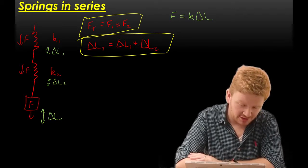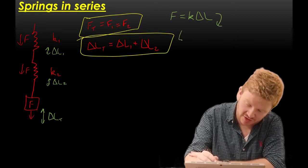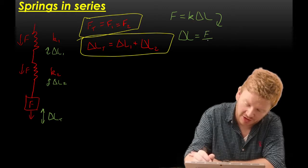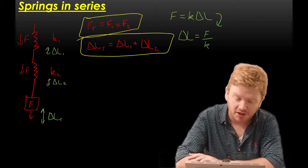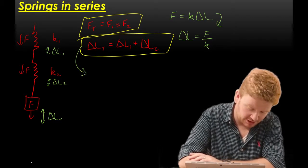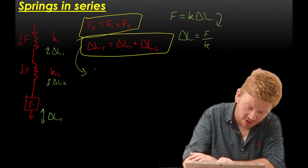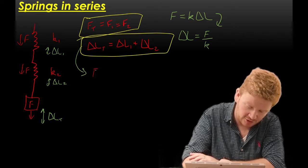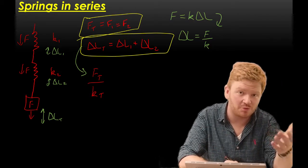So what does that mean that I can do? Well, if I rearrange Hooke's law, that says that the extension of any spring is equal to the force on that spring divided by its force constant. So what that means is that I can rearrange my second key equation here and make it into that the extension of the total is equal to the force on the total divided by the spring constant of the total, and that's that equivalent spring constant.